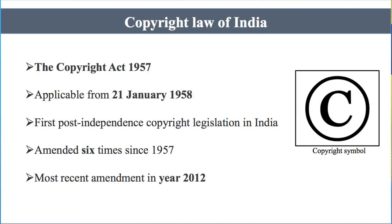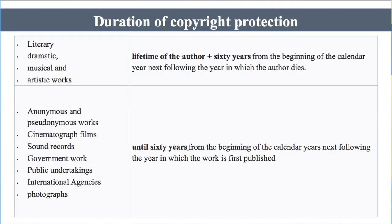The Copyright Act 1957 of India is applicable from 21st January 1958 and was the first post-independence copyright legislation in India. It was amended six times since 1957, including in 2012. Regarding the duration of copyright protection: for literary, dramatic, musical, and artistic works, the duration is the lifetime of the author plus 60 years. The 60 years begin from the start of the calendar year next following the year in which the author dies.